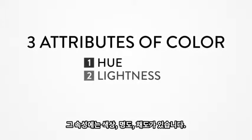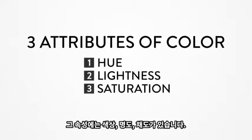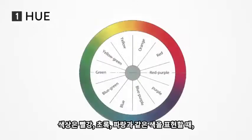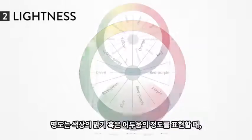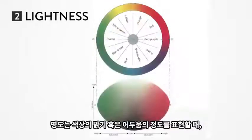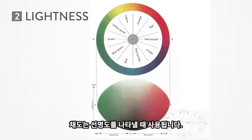The three attributes of color are hue, lightness, and saturation. Hue is a term that we commonly use to describe color like red, green, and blue. Lightness describes how bright or how dark a particular hue is. Saturation describes the vividness or dullness of a color.